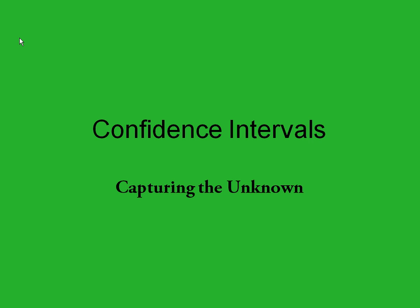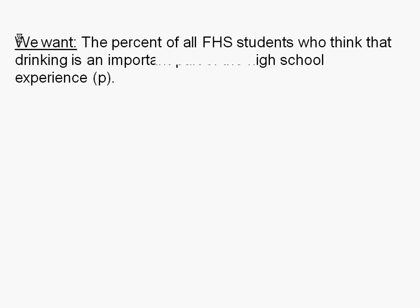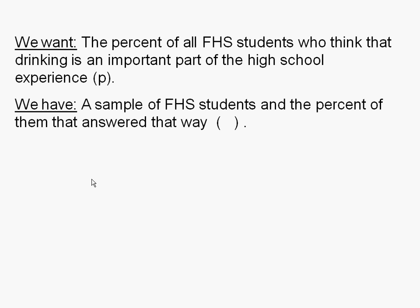Students, hello. This is the part of the course where everything starts to come together — all of our hard work. We're now going to see a lot of the uses of statistics: confidence intervals, capturing the unknown. Here's what we set out to do today. We want to know the percent of all Fairview High School students who think that drinking is an important part of the high school experience. We want p — just plain old p — which stands for the population proportion. But we don't have that; we didn't do a census. What we have is just a sample of FHS students.